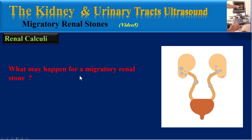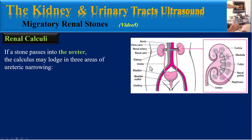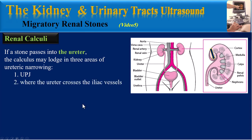In this video I will explain what may happen to a migratory renal stone. If a stone passes into the ureter, the calculus may lodge in three areas of ureteric narrowing: first, the ureteropelvic junction (UPJ); second, where the ureter crosses the iliac vessels; and third, the ureterovesical junction (UVJ).